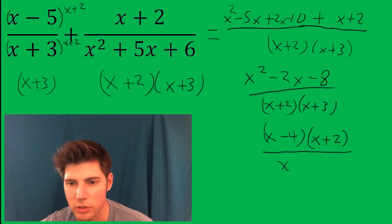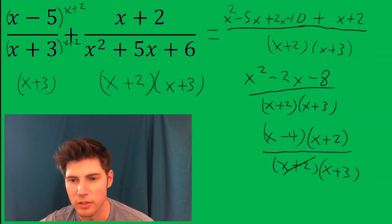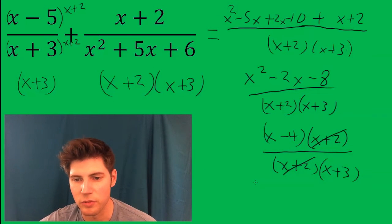over (x + 2)(x + 3). So notice these (x + 2)'s cancel. The final answer is (x - 4)/(x + 3).